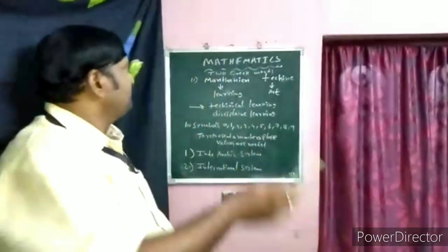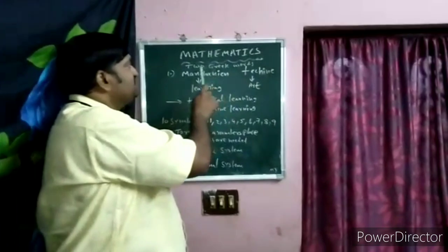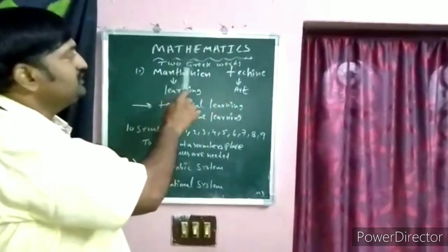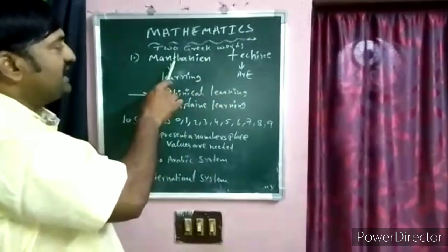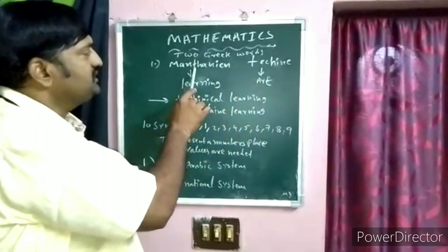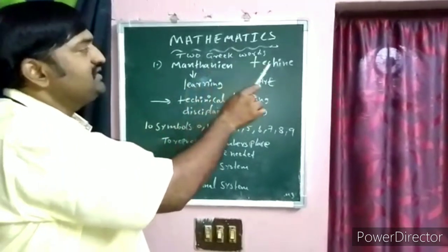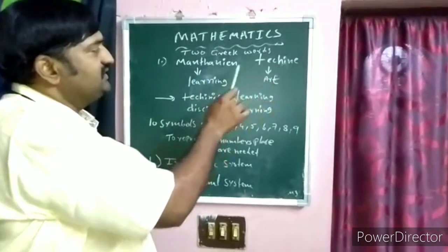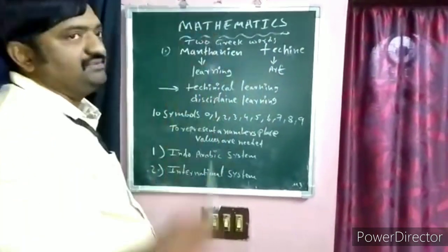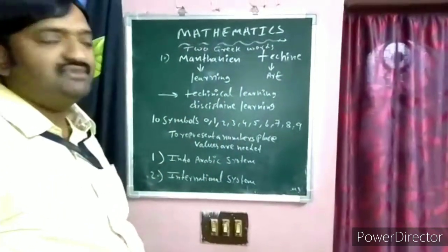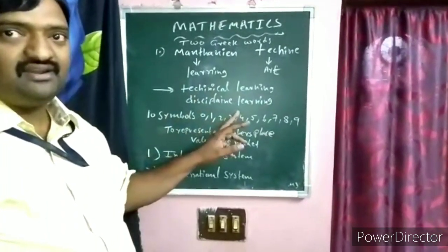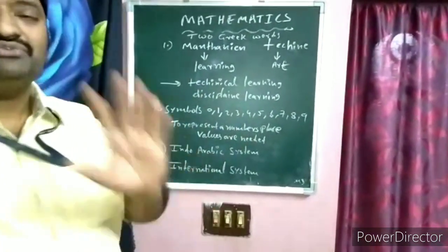Mathematics — this is mathematics. Mathematics means a combination of two Greek words. The first word is Manthanein and the second word is a technique. These two words combined give us mathematics, which means technical learning or disciplined learning.